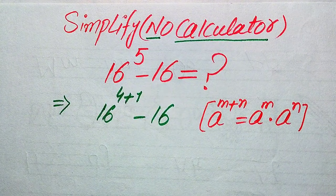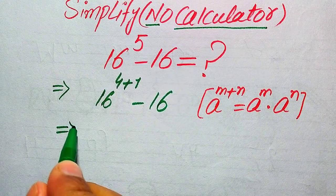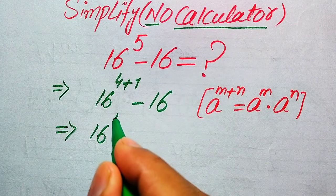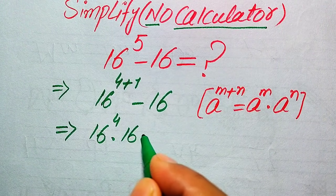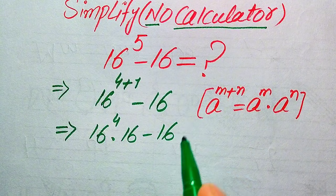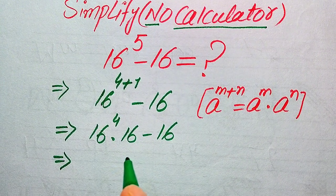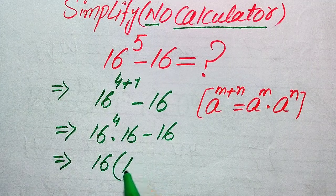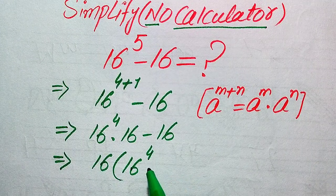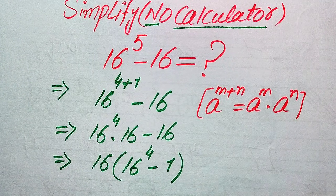According to this law, we break the exponent of this term and it will be written as 16 to the power of 4 multiplied by 16, minus 16. Now you see that both terms involve 16, so we factor out 16 and get the remaining value as 16 to the power of 4 minus 1.